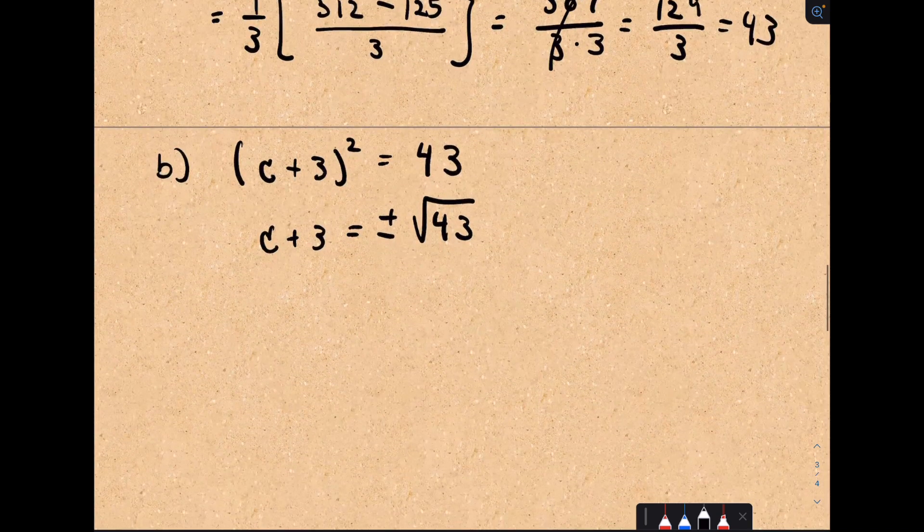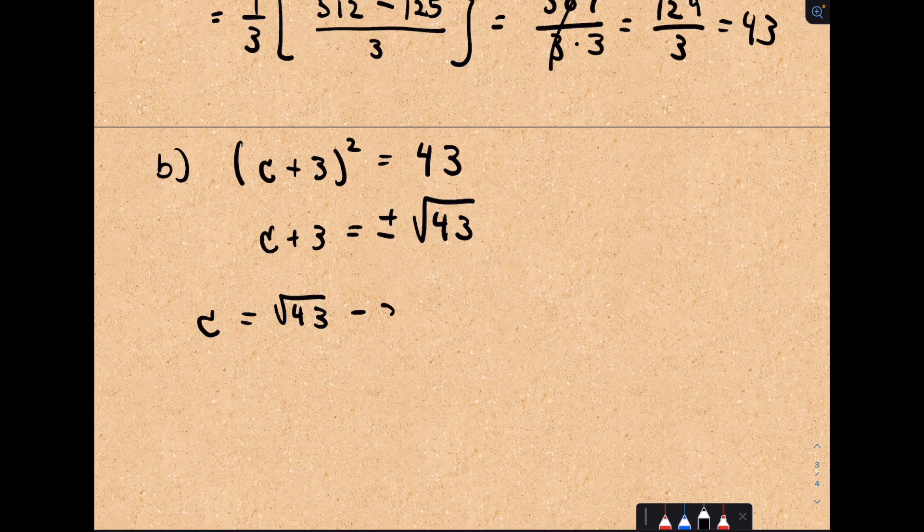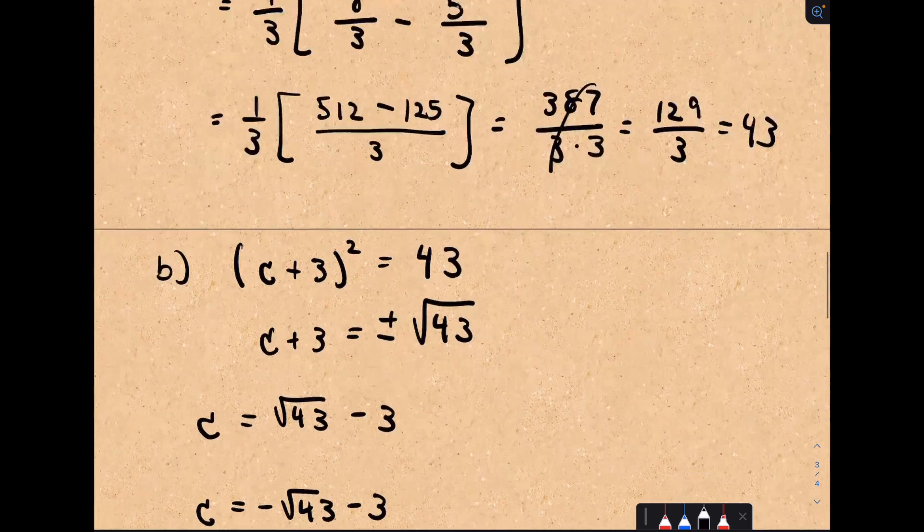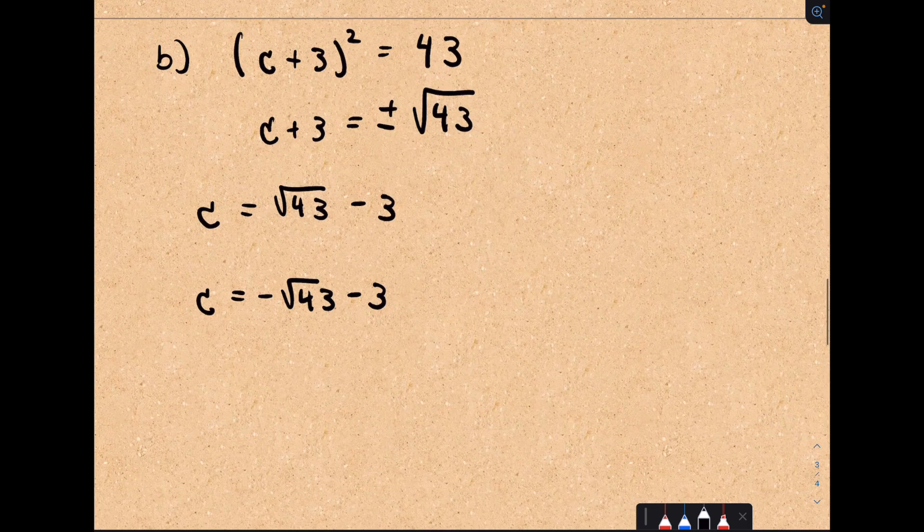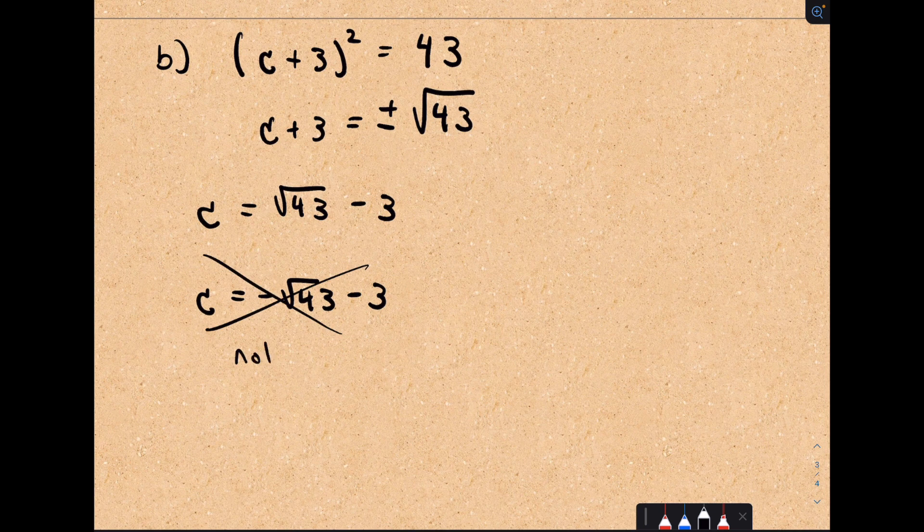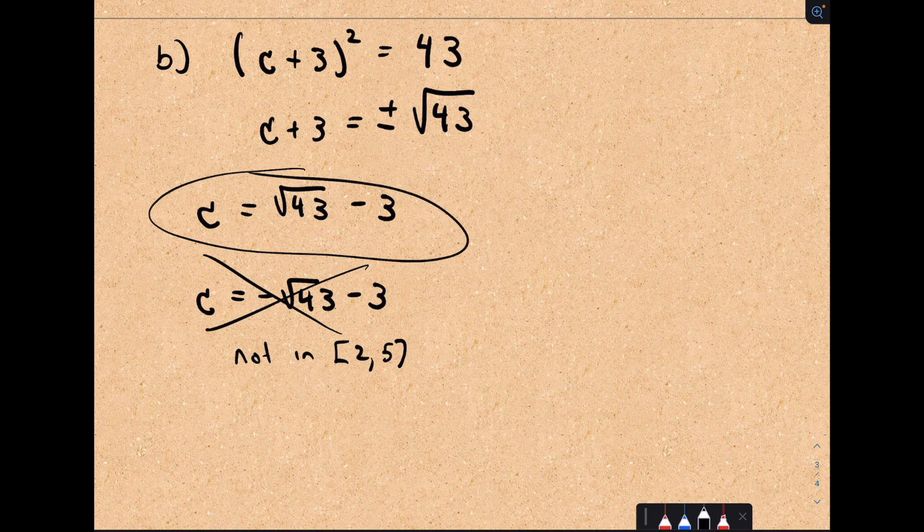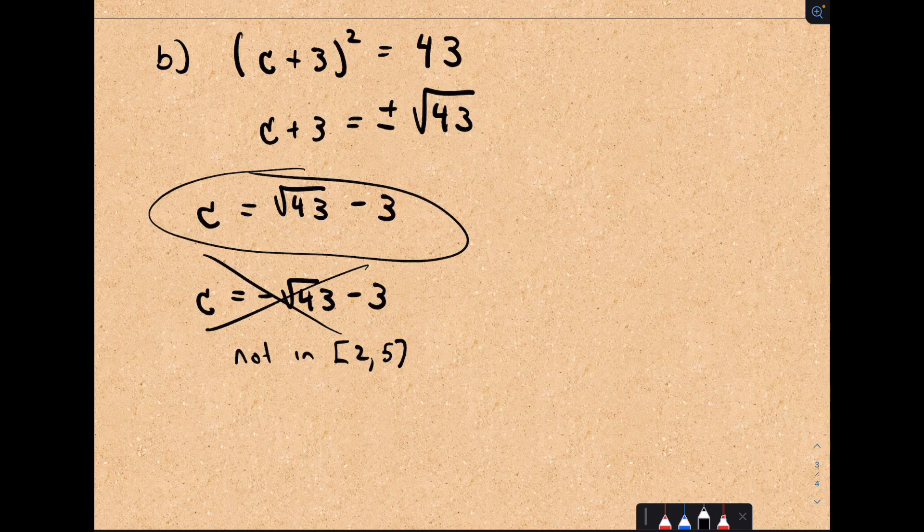Now be careful, our two solutions to this equation would be positive square root of 43 minus 3, and C equals negative square root of 43 minus 3. But remember that our solution had to be in this interval from 2 to 5. The second one is not in 2 to 5. So our solution for C would be square root of 43 minus 3. You can check that does fall inside that interval from 2 to 5.